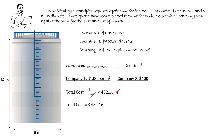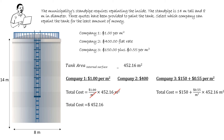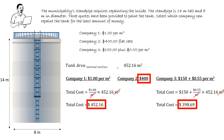Company 2 will charge a flat rate of $400. And Company 3 will charge based on a combination of both flat rate and per square metre. The total cost for Company 3 is $150 plus 55 cents per square metre multiplied by 452.16 metres squared. The metre squared will cancel, leaving us with cost. The total cost for Company 3 is $398.69. The clear winner comparing all three prices is Company 3. Therefore, Company 3 can repaint the tank for the least amount of money.